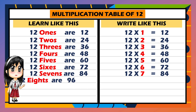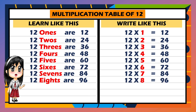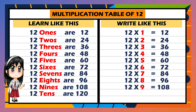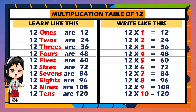12 eights are 96. 12 nines are 108. 12 tens are 120.